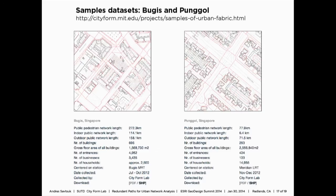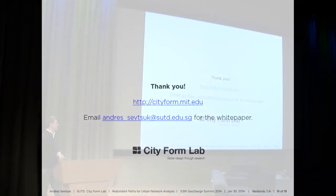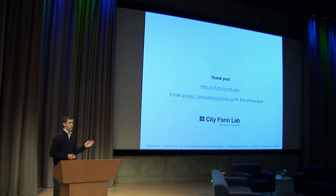We've also recently surveyed in great detail a few neighborhoods in Singapore and provide the data sets on the website for testing. This is Bugis and this is Punggol — roughly a square kilometer each. They document all building footprints and structural walls, all pedestrian routes inside and outside of buildings, and all businesses in those environments. A 3D snapshot of Bugis shows businesses going up several floors, around 4,000 businesses in the district, with gray routes showing all walking routes available. The white paper is available from our website.